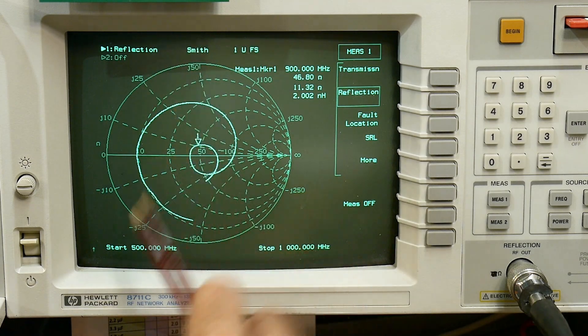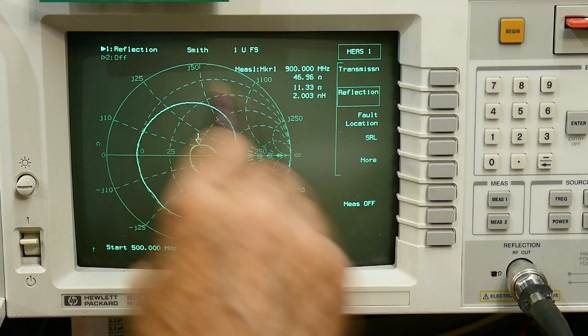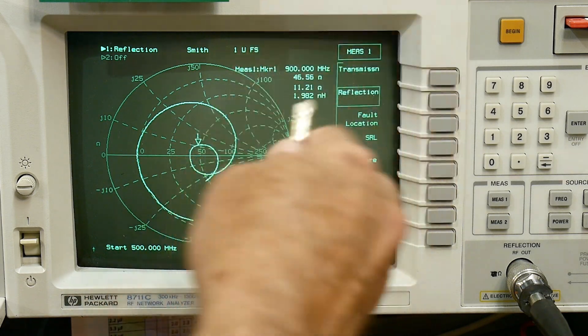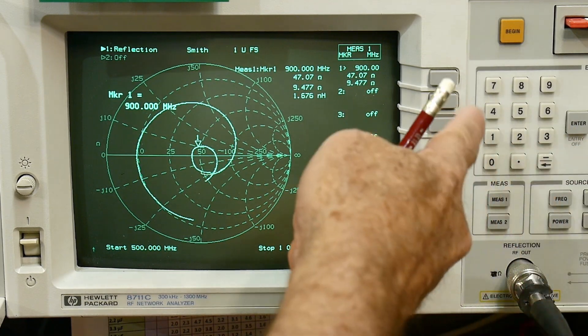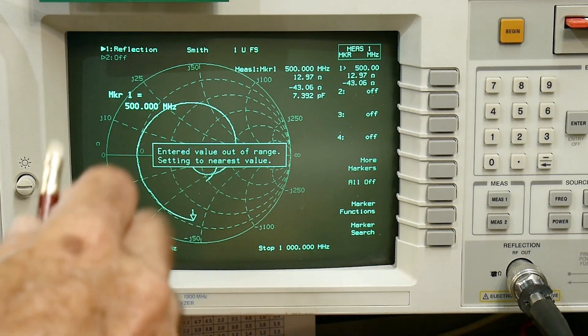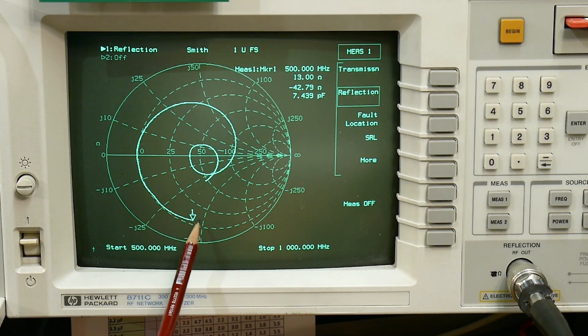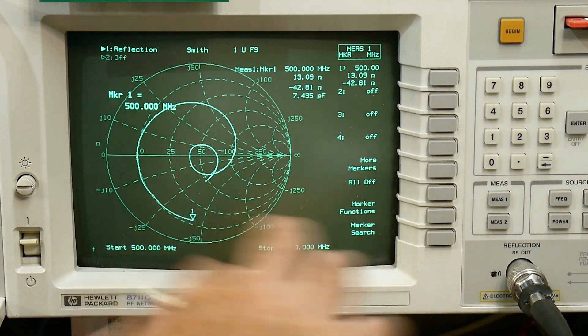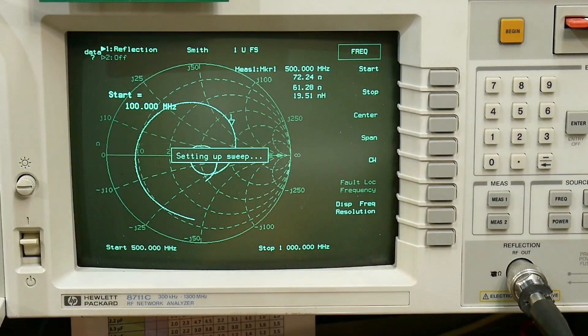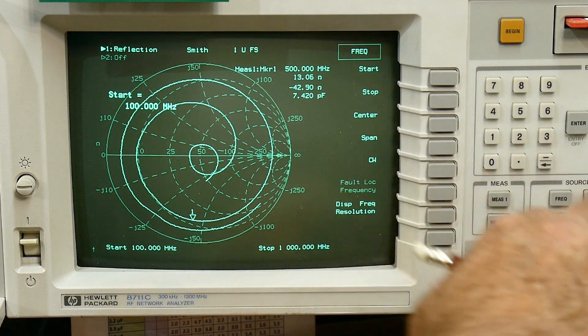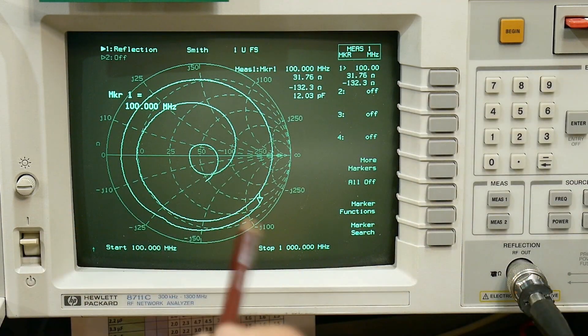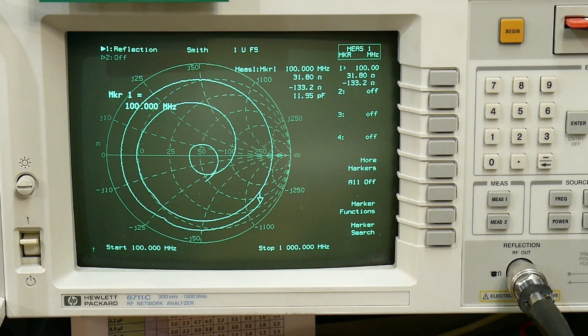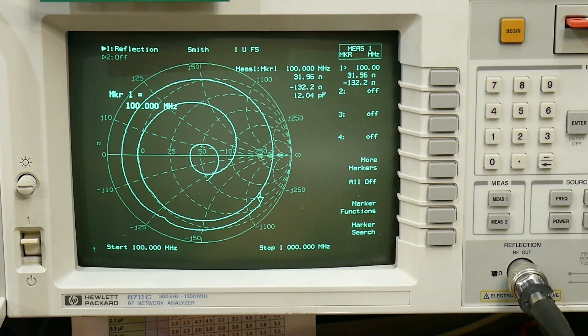Alright. So what does the spiral tell us? We're sweeping between 500 megahertz and one gigahertz. And this is a graph of impedance. Alright. And at 100 megahertz. Let's do a marker at 100 megahertz. Okay. We are down at the bottom here. Wait a minute. I have to change my frequency. Frequency, we need to start at 100 megahertz. Alright. So we can now set our marker at 100 megahertz and we can measure the impedance. It's about 130 ohms.